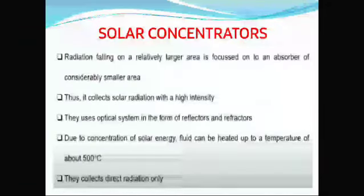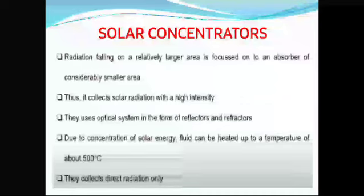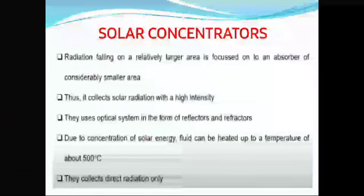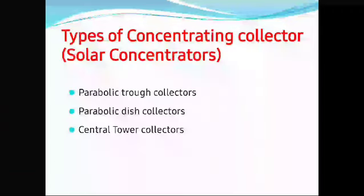In solar concentrators, radiation falling on a relatively large area is focused onto an absorber of considerably smaller area, collecting solar radiation with high intensity. They use an optical system in the form of reflectors and refractors. Due to the concentration of solar energy, the fluid can be heated up to a temperature of 500 degrees Celsius. They collect direct radiation only. The types are parabolic trough collector, parabolic dish collector, and central tower collector.